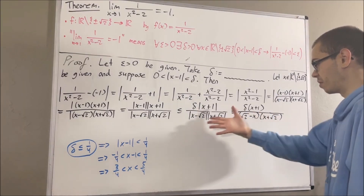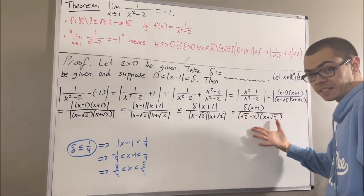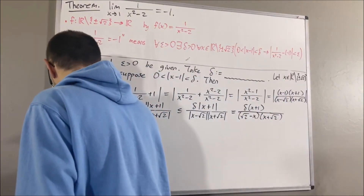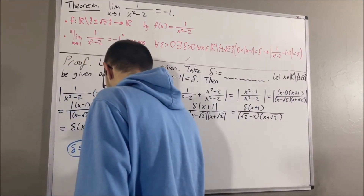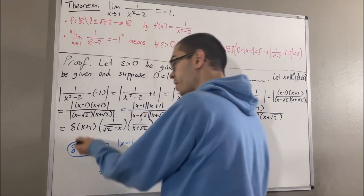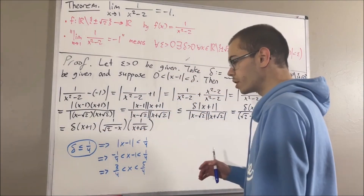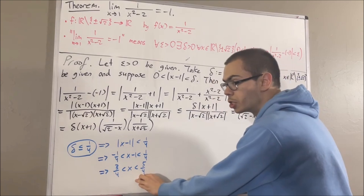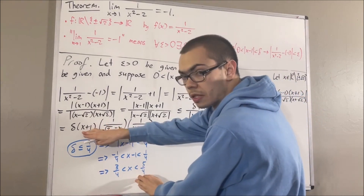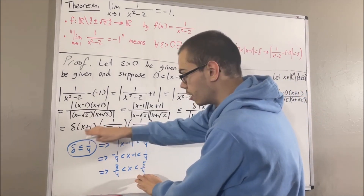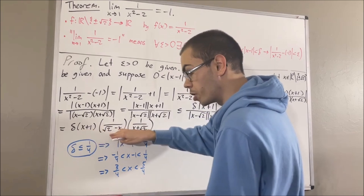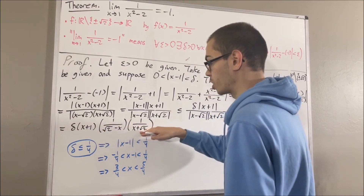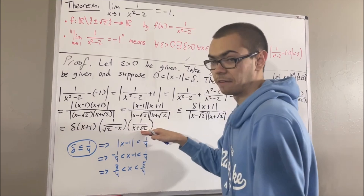Since x plus 1 is positive, its absolute value equals x plus 1. Since x minus square root of 2 is negative, its absolute value equals square root of 2 minus x. And since x plus square root of 2 is positive, its absolute value equals x plus square root of 2. This is true when we restrict delta to be less than or equal to one-fourth. Now we can manipulate the inequality to show that x plus 1, one over square root of 2 minus x, and one over x plus square root of 2 are each less than fixed positive quantities.